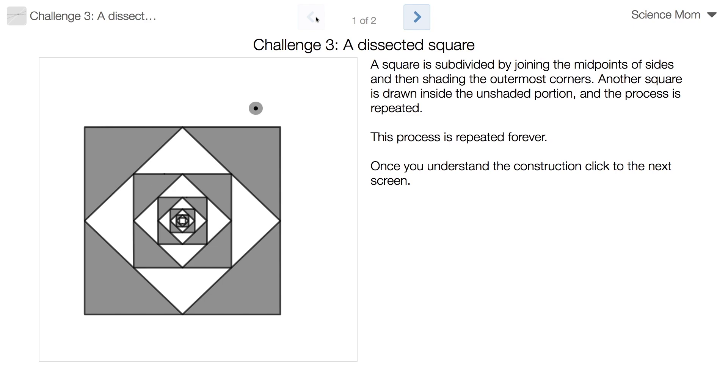This is another geometric construction where I've subdivided a figure over and over to get a neat pattern out of it. In this case, the shape is a square, and I have subdivided it as you see here. Starting from the outside, we make something of a diamond shape, and then we shade the corners, and we repeat over and over and forever and ever, and we get a nice figure.